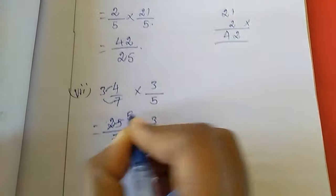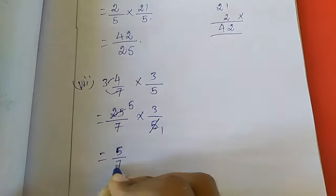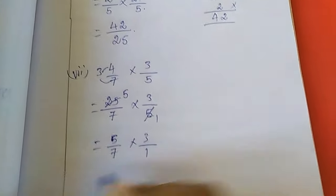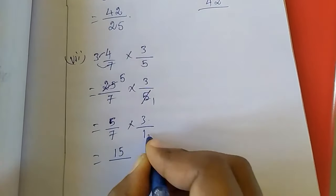So 1 times 5 is 5, 5 times 5 is 25, so 5/7 into 3/1. Now if you multiply, 5 times 3 is 15 divided by 7 times 1 is 7.